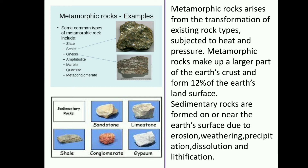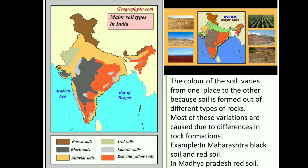What are sedimentary rocks? Sedimentary rocks are formed on or near the earth's surface due to erosion, weathering, precipitation, dissolution and lithification. The color of the soil varies from one place to another because soil is formed out of different types of rocks. Most of these variations are caused due to differences in rock formation.